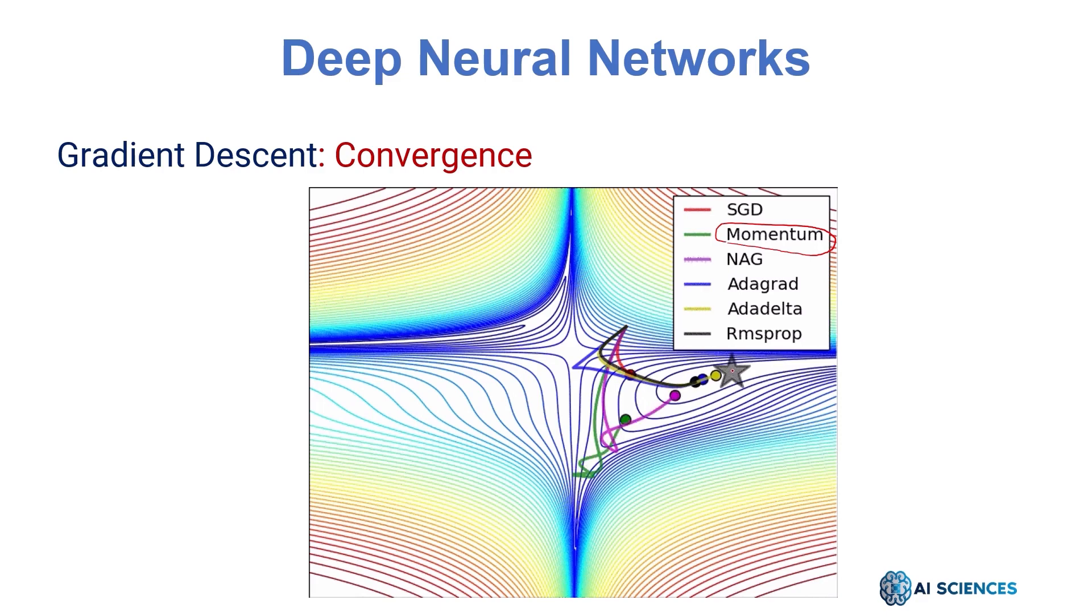This star is assumed to be a global minimum and every algorithm is going to reach towards this minimum. You can see this plain stochastic gradient descent which is in red, it is taking too long to reach there although it is moving towards it. For this particular slide, AdaDelta reaches much more quickly, but momentum also follows.